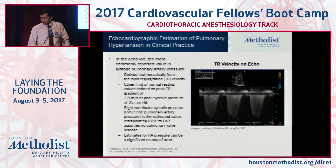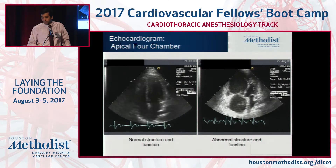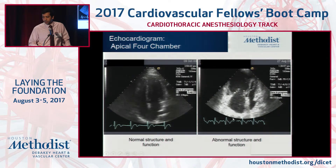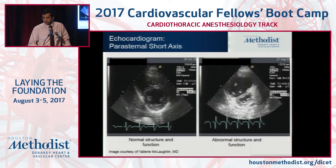This is how you diagnose PH on echo, where you look at the tricuspid jet and calculate your pressures — the RV systolic pressure, which would be equal to the pulmonary artery systolic pressure in the absence of pulmonary stenosis. And this is how an echo with a patient with severe pulmonary hypertension and RV dysfunction is going to look, where the RV is markedly enlarged with a small LV and both systolic and diastolic collapse of the LV.